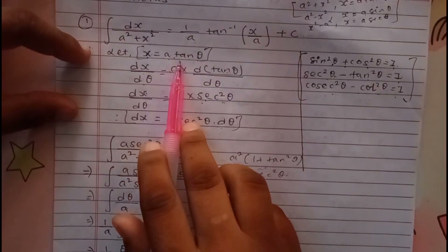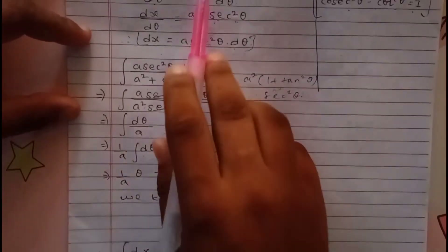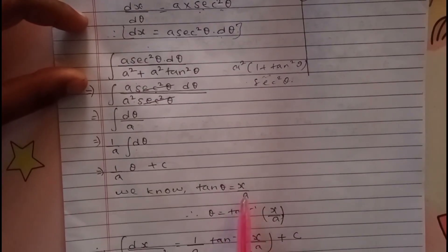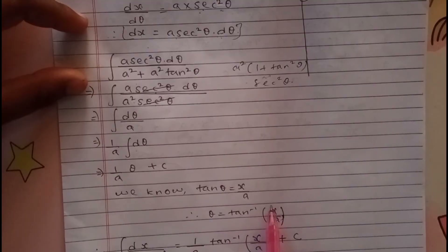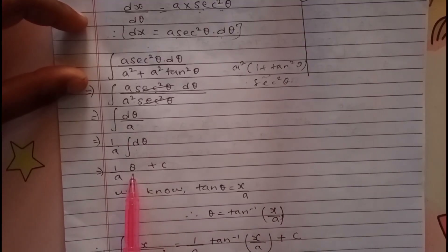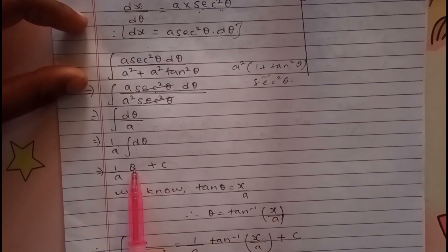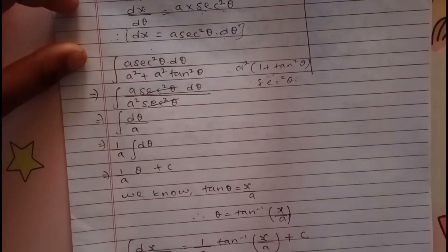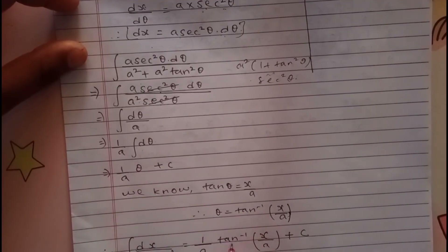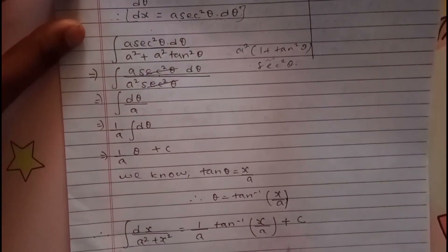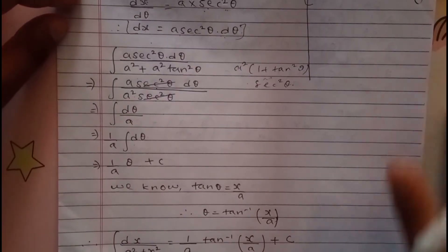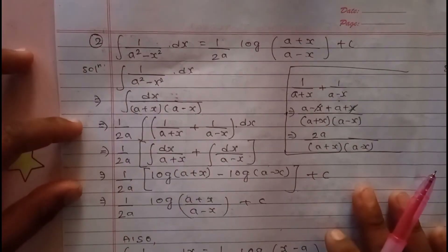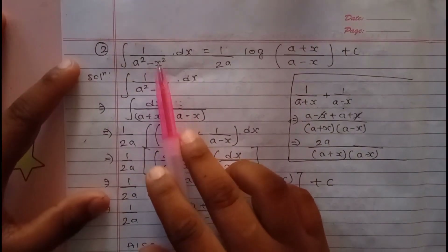Now θ in terms of x: since tan θ equals x/a, θ equals tan inverse (x/a). So the integration of dx/(a² plus x²) equals (1/a)·tan inverse (x/a), plus c. This completes the proof of the first standard integral formula.